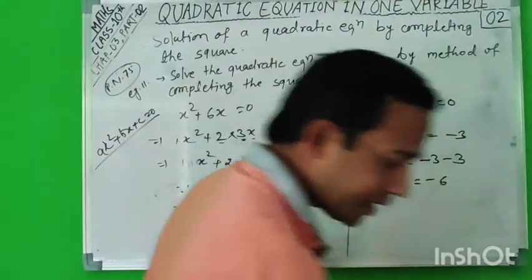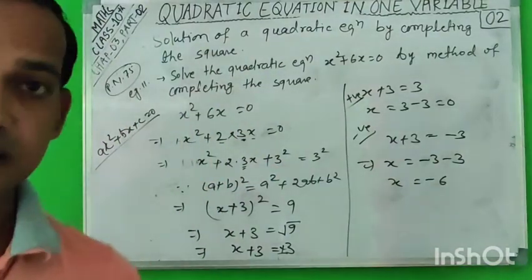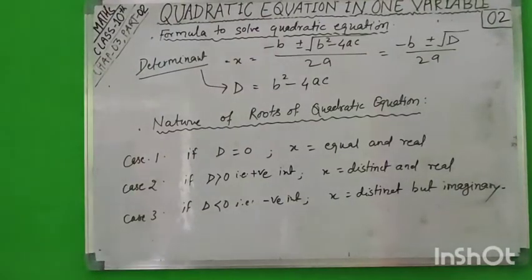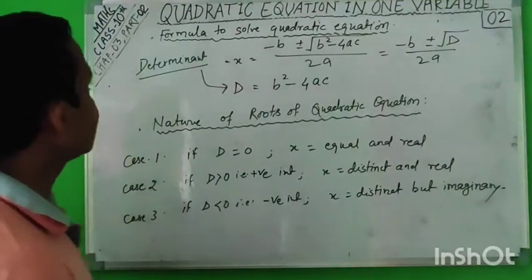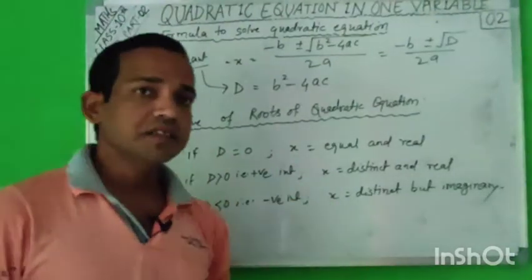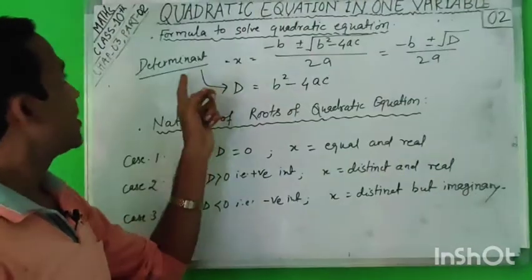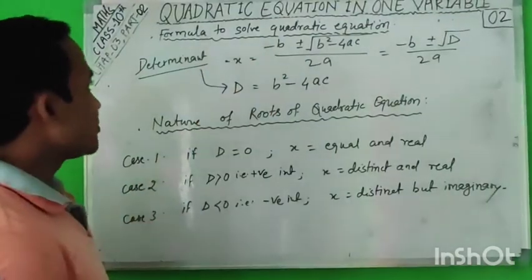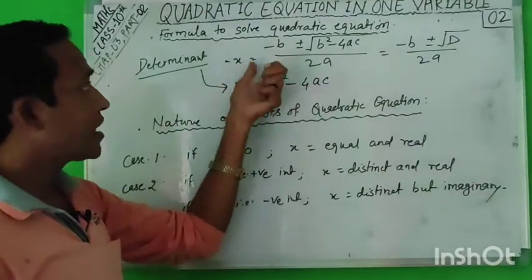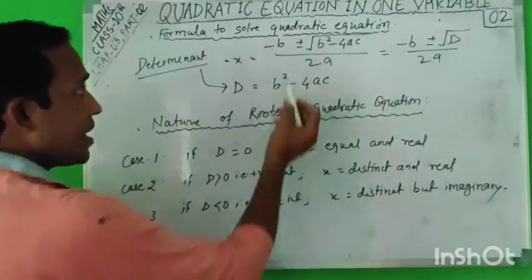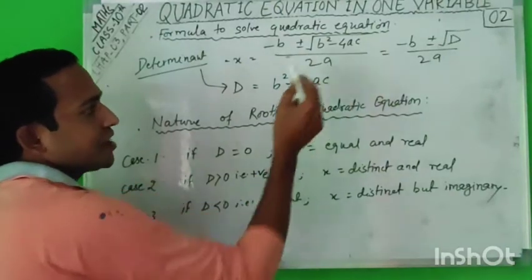Now we come to our main topic: the discriminant formula. We have a formula to solve quadratic equations. If any quadratic equation is given, the formula for solving it is: x = (-b ± √(b² - 4ac)) / 2a. This is the formula. With this we can solve any quadratic equation — x is the solution, the roots that will come out. Put the values in this formula and the solutions will be found.